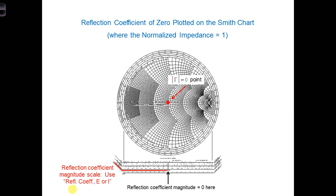And we can see this on the Smith chart. There is a reflection coefficient magnitude scale on the bottom of the Smith chart. It's labeled REFL for reflection coefficient, E or I. Using this scale, what is the magnitude of the reflection coefficient for an impedance dot at the center of the Smith chart?